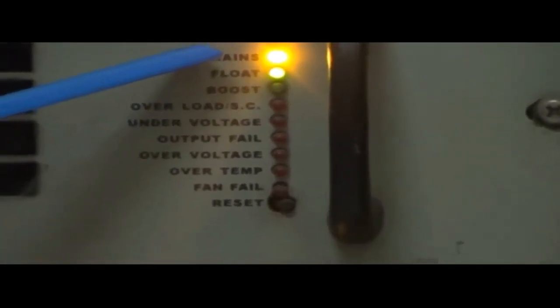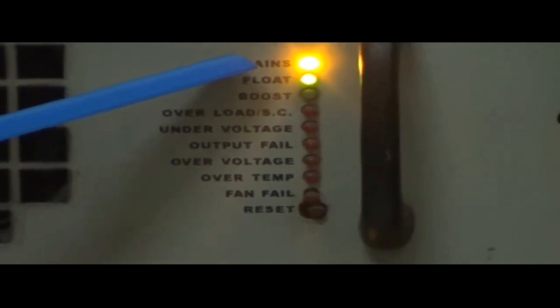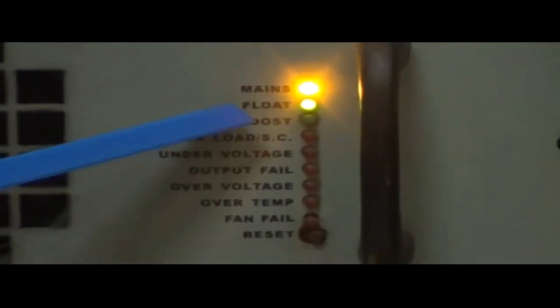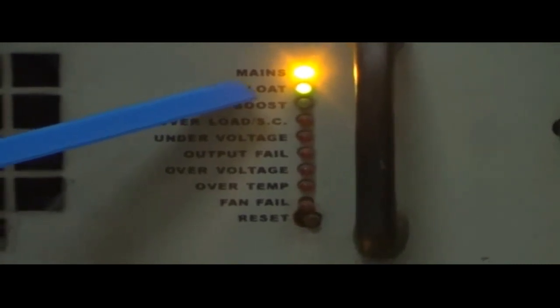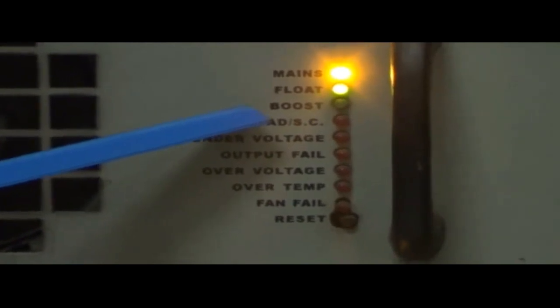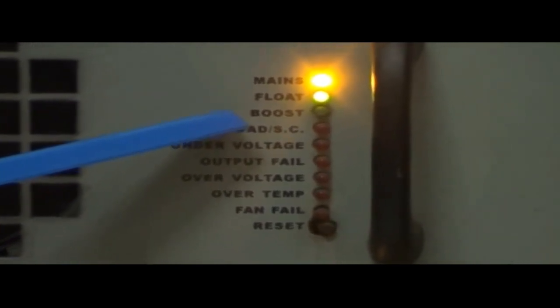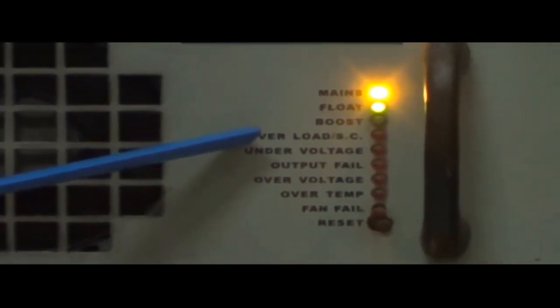Mains: It indicates that main supply of the module is on. Load: This indication shows that the module is in load or charging. Boost: This indication shows that the module is in boost mode of charge. Overload or short circuit: This shows that the module is overloaded. There is more than 60 volts.